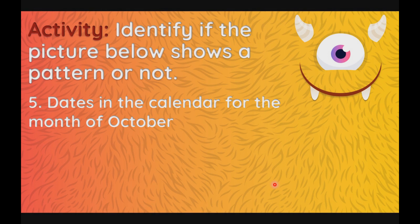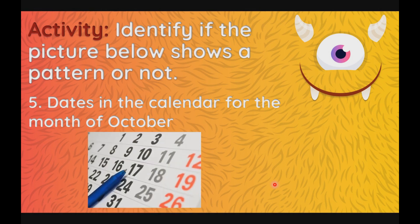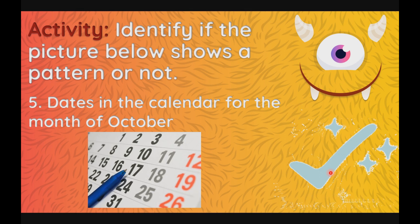And last is the dates in the calendar for the month of October. I want you to focus on the Saturdays of October. We have 3, 10, 17, 24, and 31. The question is, do they show a pattern or not? Very good. So all the pictures that we have shown show a pattern.